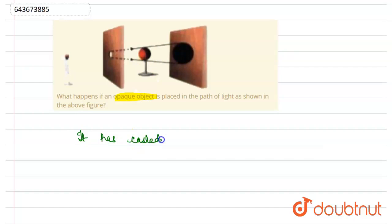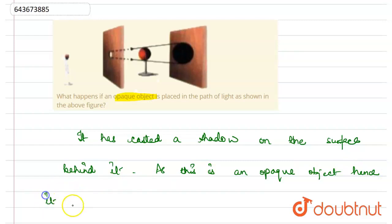casted a shadow on the surface behind it. As this is an opaque object, hence it does not allow light to pass through it, and hence it has casted a shadow.